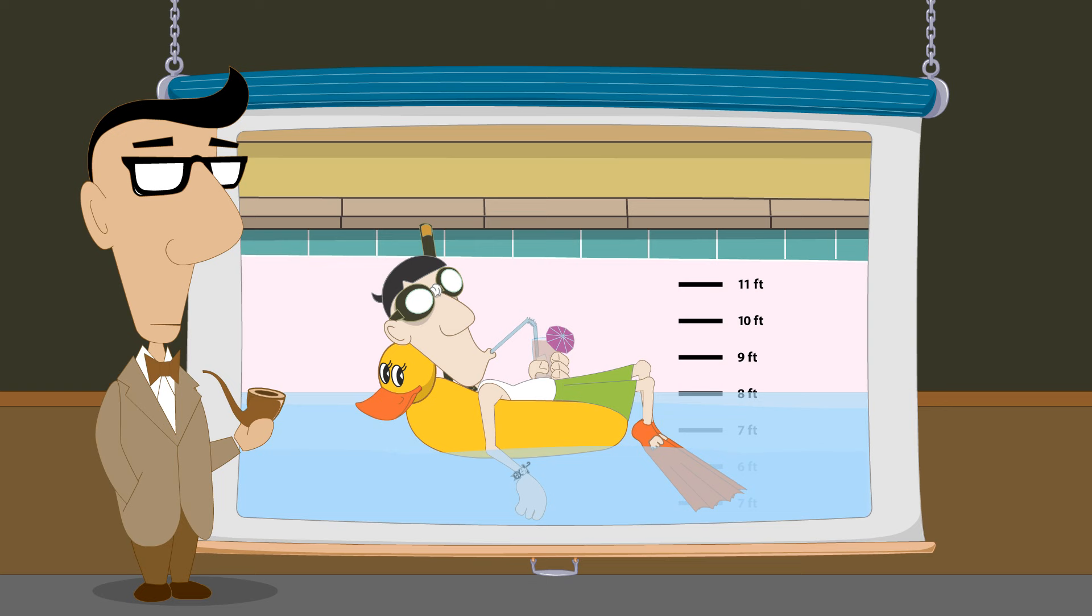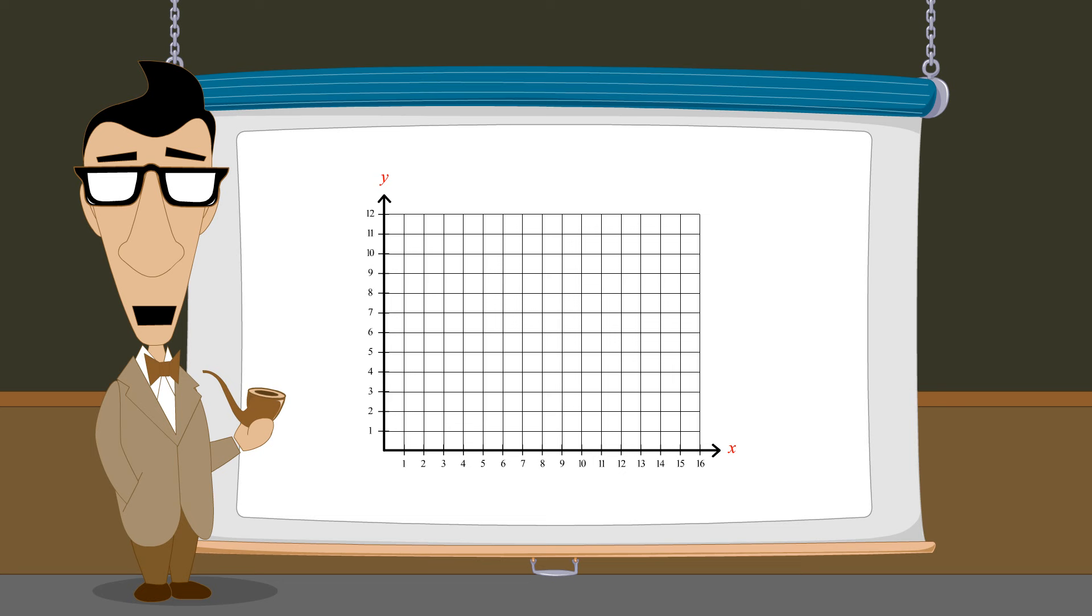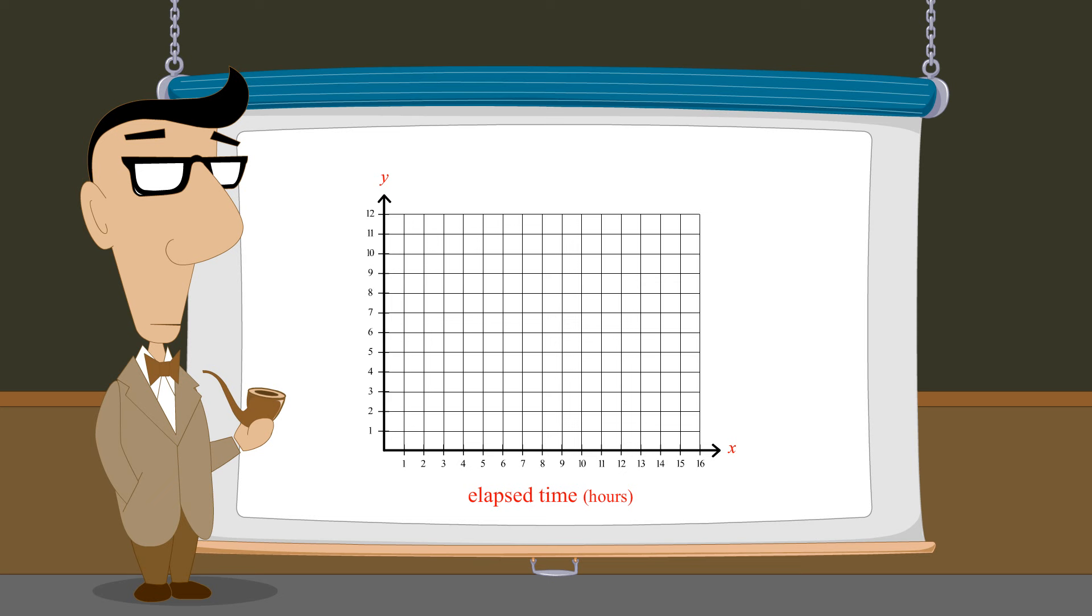Well, it looks like ACE algebra student A.V. Geekman may be in hot water. Will the pool be empty by 8 p.m.? If we graph the water depth versus time, we might be able to figure out how long it will take for the pool to completely drain. We will plot the amount of time since the drain was first opened at noon on the horizontal axis and water depth on the vertical axis.